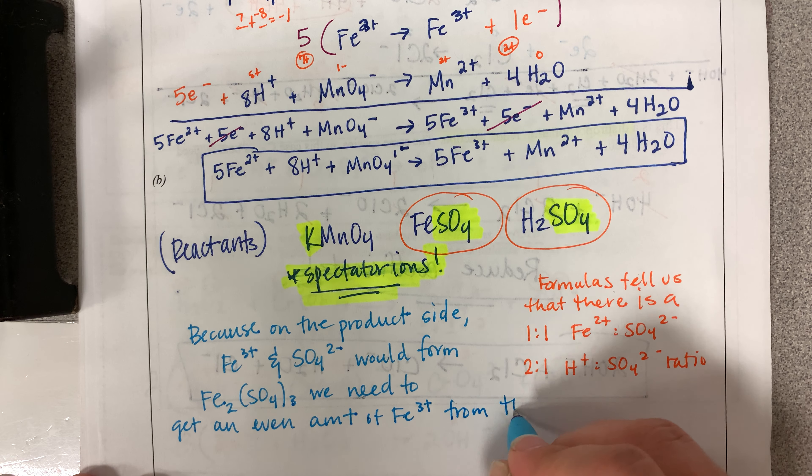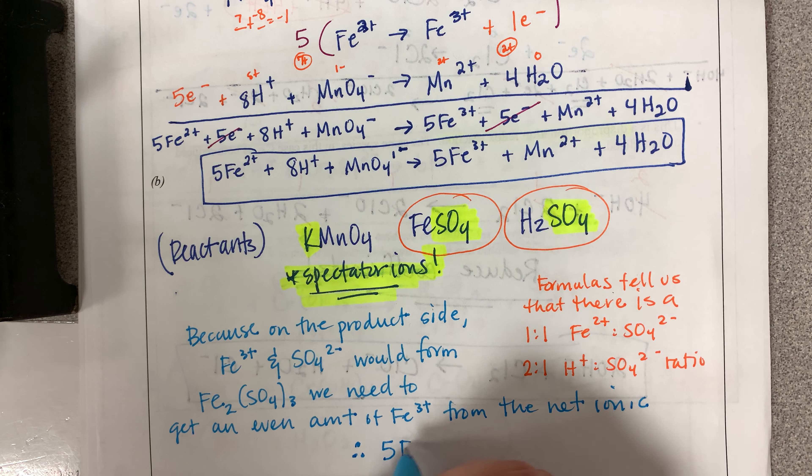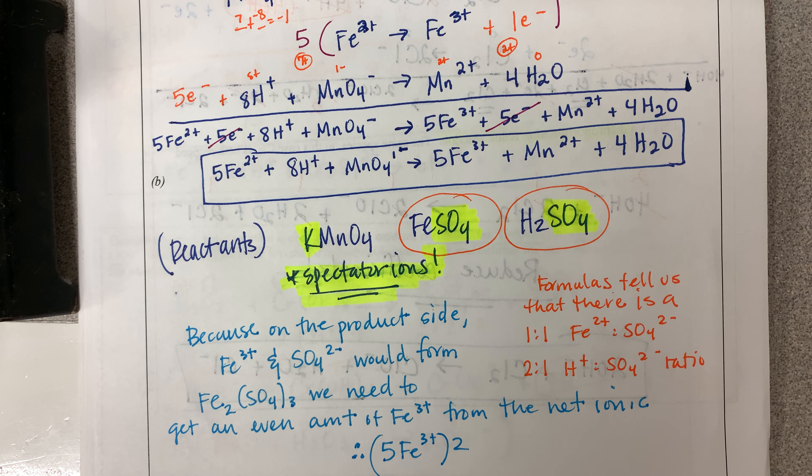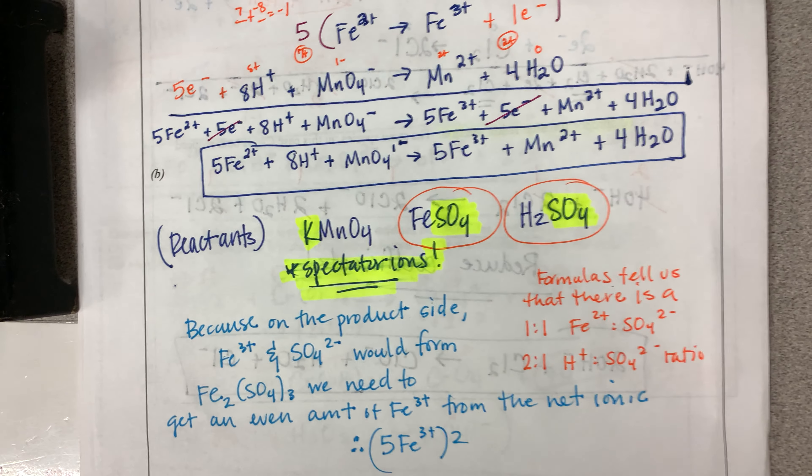So what we're going to do to get 5 Fe3+ even, we're going to multiply this and everything else by a factor of 2.